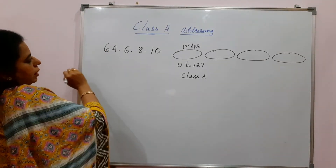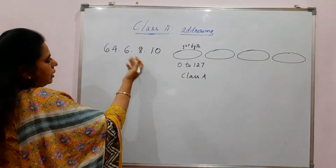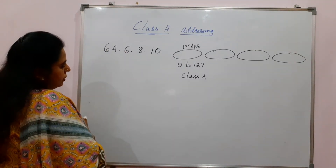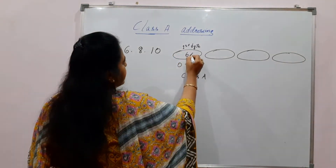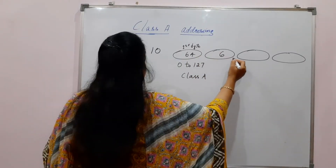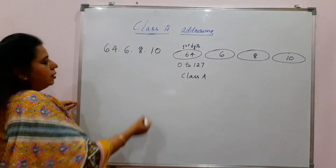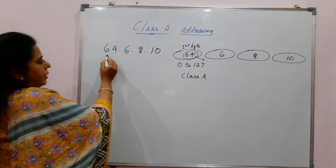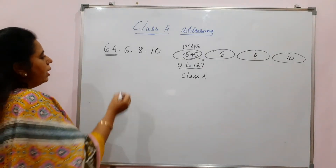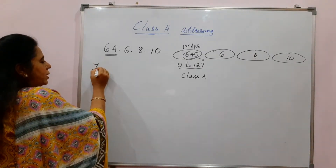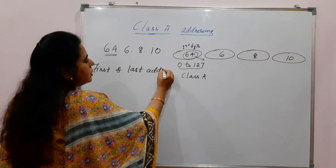For this, you have been asked to find out what is the network address or the first address, and what is the broadcast address or the last address. The first byte in this example is 64. 64 lies in the range of 0 to 127, so it is a Class A address. To determine the first and last address, you need to know the subnet mask.